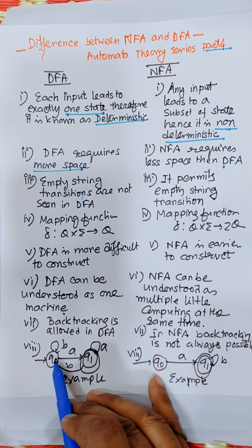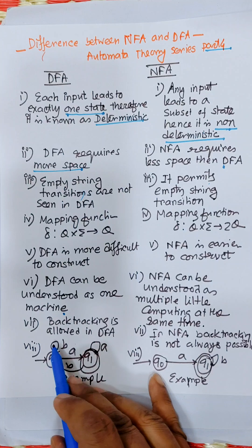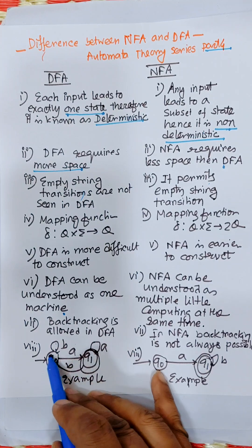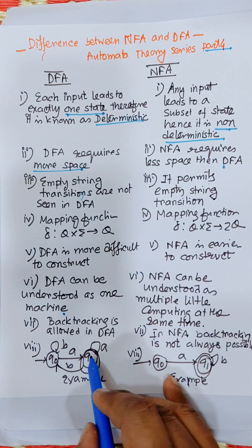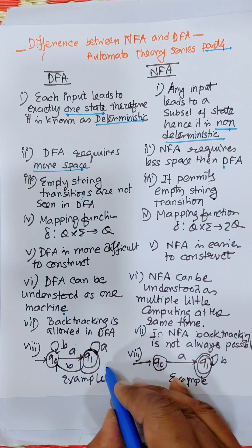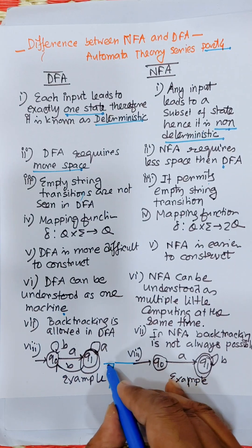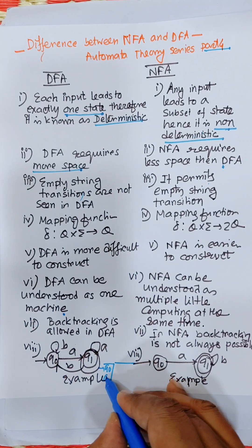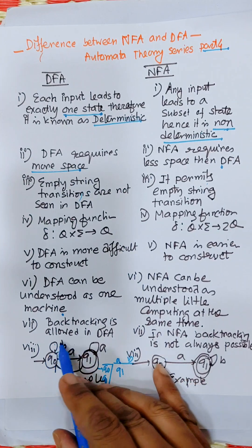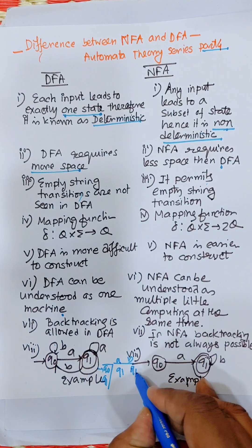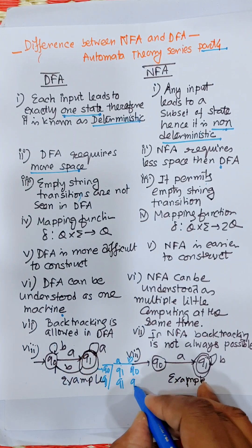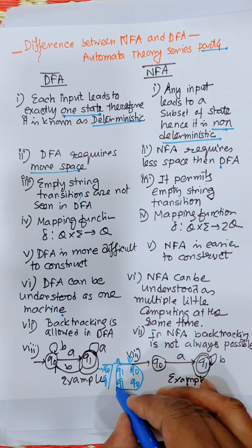Now here is a diagram. Suppose there are two states Q0 and Q1, and inputs A and B. From Q0 on input A and Q0 on input B, and from Q1 on input A and Q1 on input B — this is a DFA. Writing the transition table: Q0 on A goes to Q1, Q0 on B goes to Q0, Q1 on A goes to Q1, Q1 on B goes to Q0. Every output is defined, confirming this is a DFA.